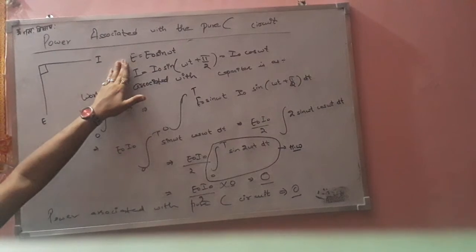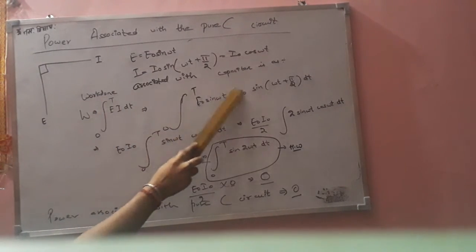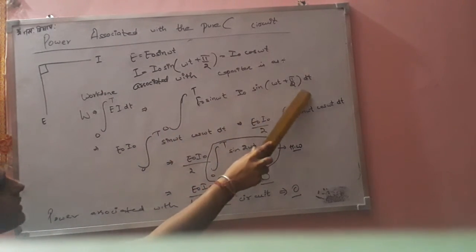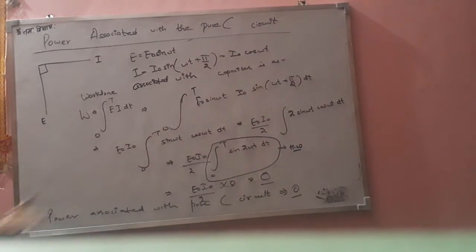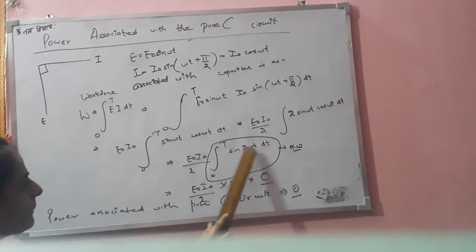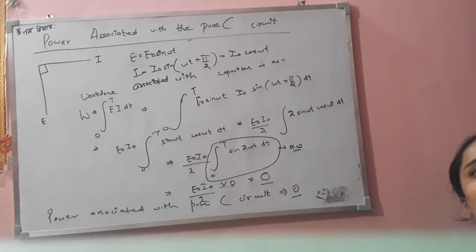Again summarizing: E is equal to E-naught·sine(omega-t), I is equal to I-naught·cos(omega-t). Power associated with capacitor W equals the integral from 0 to T of E·I·dt, which gives E-naught·I-naught by 2 times the integral of 2·sin(omega-t)·cos(omega-t)·dt, equal to sin(2·omega-t). So the work done is 0, therefore the power associated with the pure C circuit is 0.